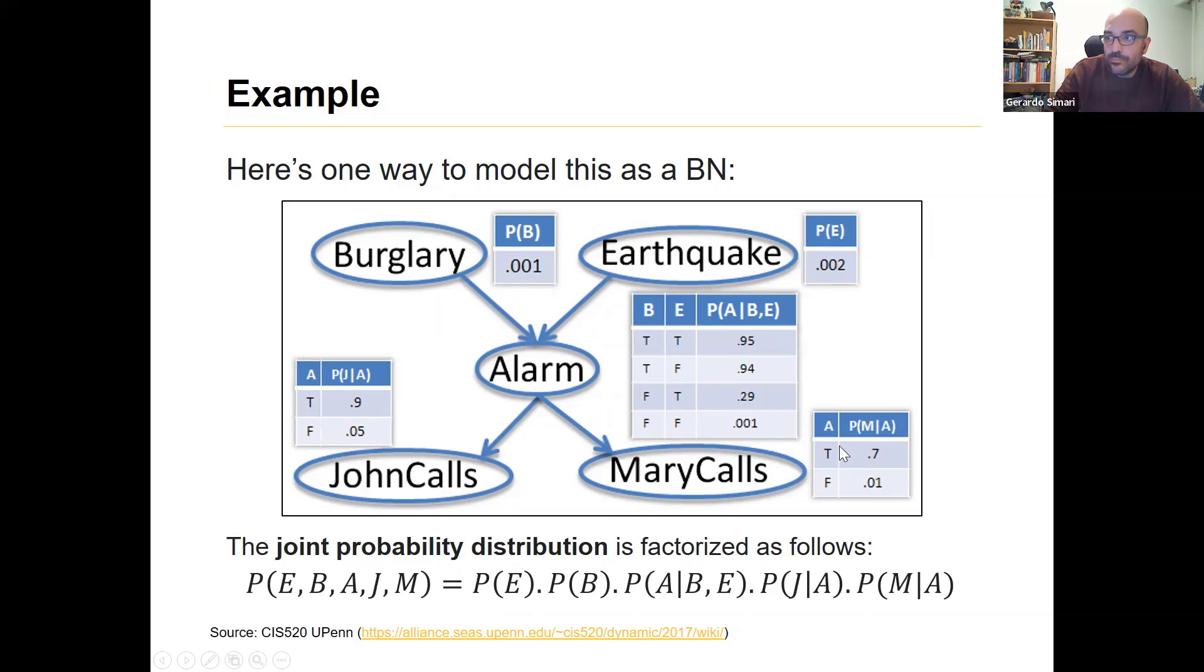These two CPTs are conditional probability tables. They encode what we had in the problem statement where we said, suppose that the alarm sounds, John will call most of the time, 90% of the time. And if the alarm doesn't sound, he'll call us 5% of the time, right? So for Mary, Mary is lower because as the problem statement said, she enjoys loud music. So it's a lower chance that she'll hear it, that's why this is 0.7. And she has a lower false positive also than John.